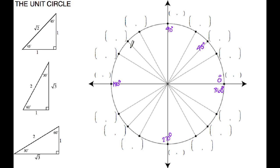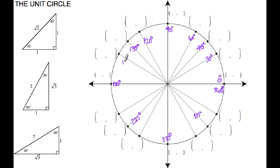Each angle measurement in the middle of your quadrant is an increment of 45 degrees: 45, 90, 135, 180, 225, 270, 315, and then finally 360. Your other angle measurements are increments of 30 degrees: 30, 60, 90, 120, 150, 180, 210, 240, 270, 300, 330, and then finally 360.